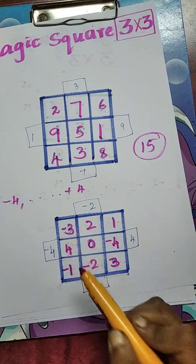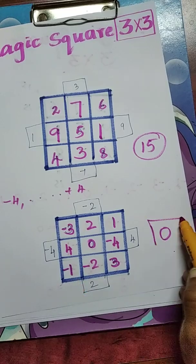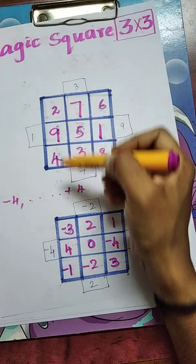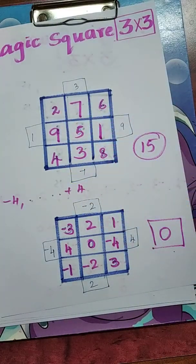And column-wise: minus 3 plus 4 minus 1, result is 0. So, while adding row-wise, column-wise, or diagonal-wise, we have to get the same result.